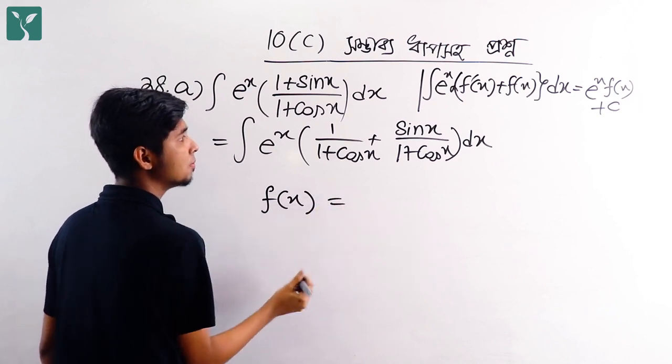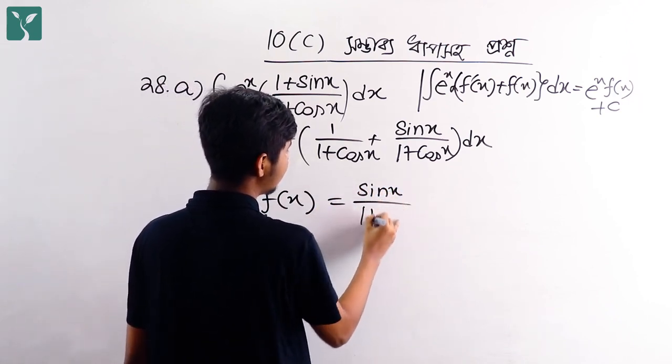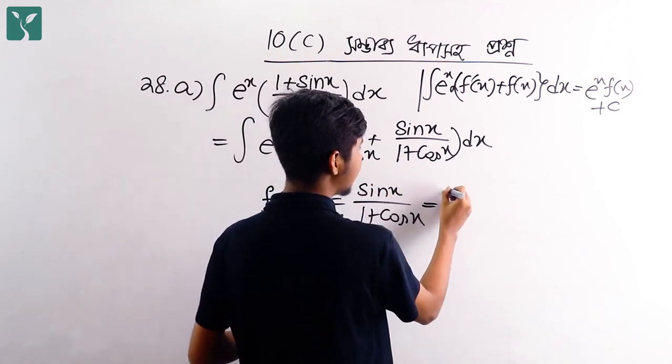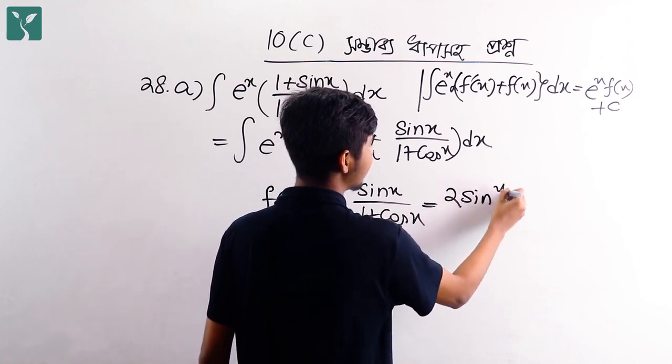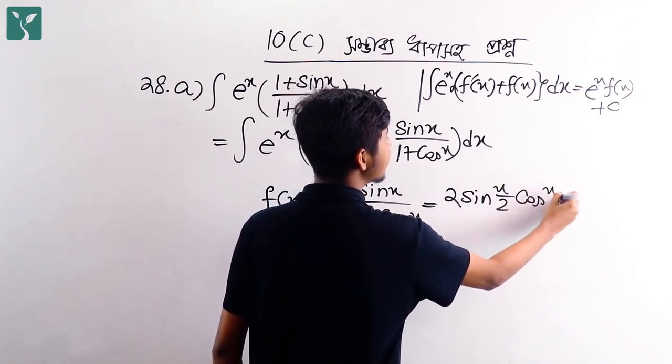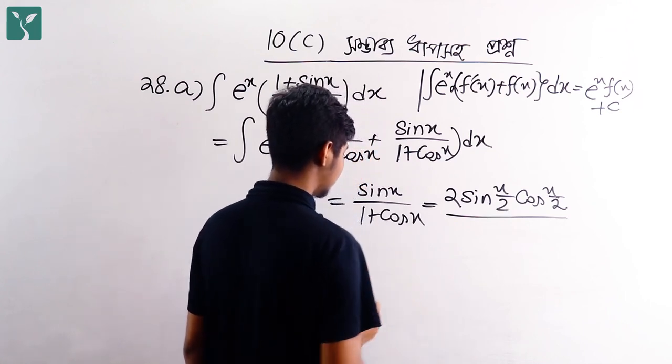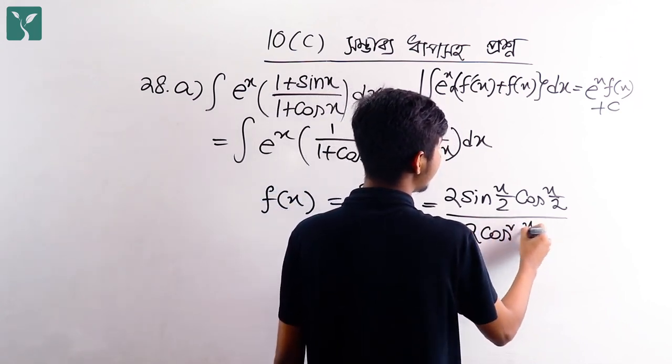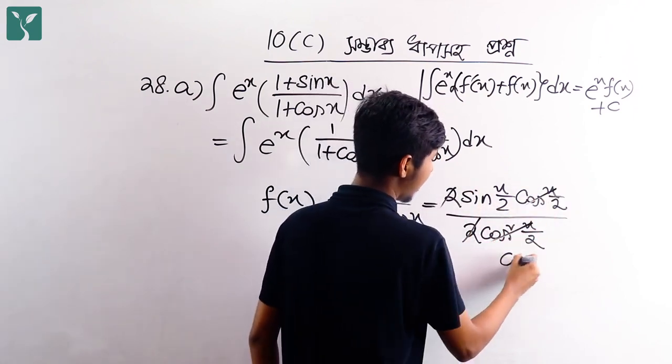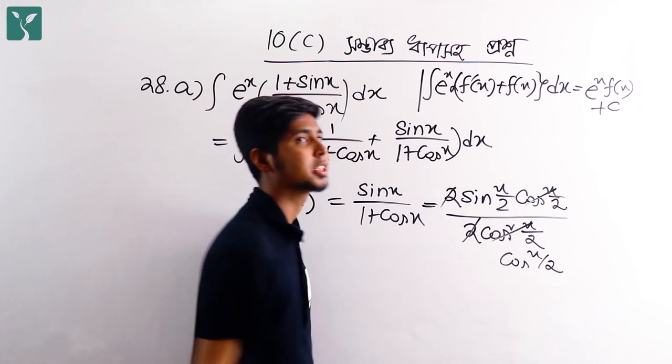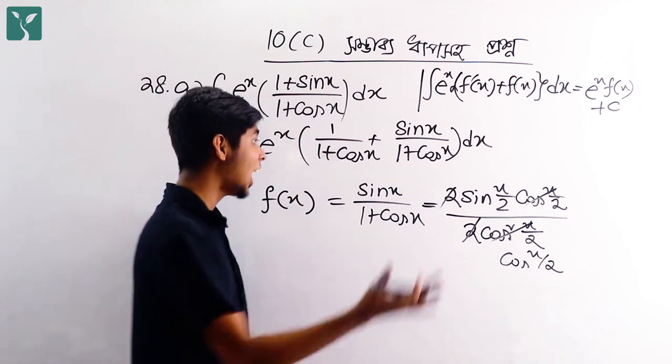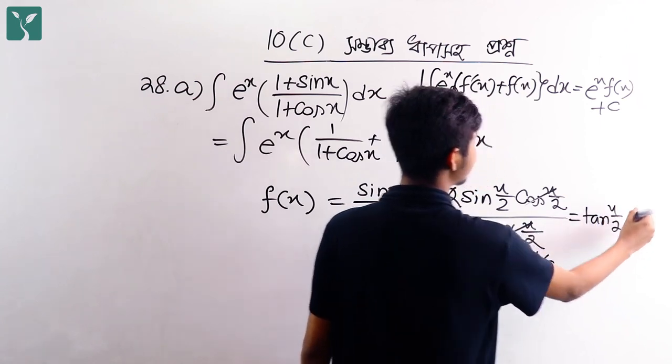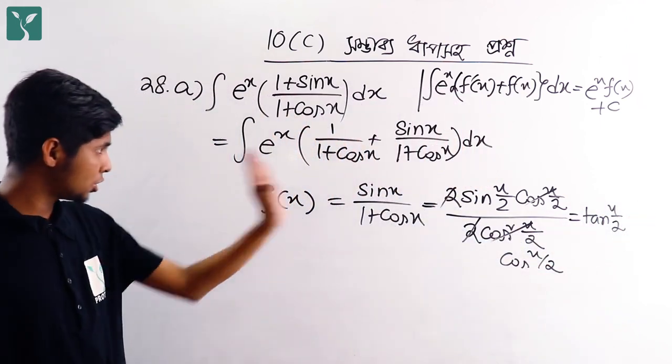So here we can tell you, f of x is sine x divided by 1 plus cos x. This equals 2 sin x by 2 cos x by 2 divided by 2 cos square x by 2, which equals tan x by 2. So f of x is tan x by 2.